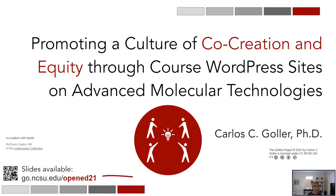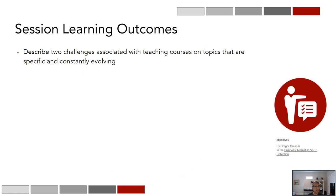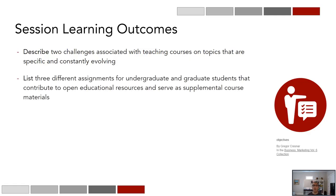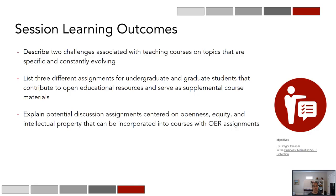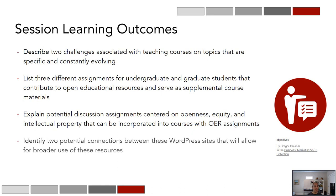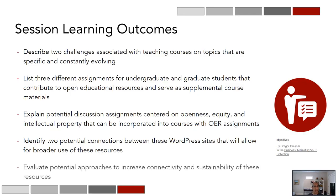These slides are available at go.ncsu.edu. Our learning outcomes are to describe two challenges associated with teaching courses on topics that are specific and constantly evolving, to list three different assignments for undergraduates and graduate students that contribute to open educational resources and can serve as supplemental course materials, to explain potential discussion assignments centered on openness, equity, and intellectual property that can be incorporated into courses with OER assignments such as these, to identify two potential connections between these WordPress sites that will allow for broader use of these resources, and finally to evaluate potential approaches to increase connectivity and sustainability of these resources.